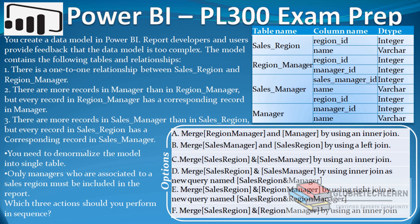Now let's understand the question. We have four tables with ID fields such as Region ID and Manager ID. Based on these IDs, the tables have relationships. As per the requirement, we have to merge all those tables into a single table so we can have denormalized data, removing complexity from the model by creating just one table with all the data.